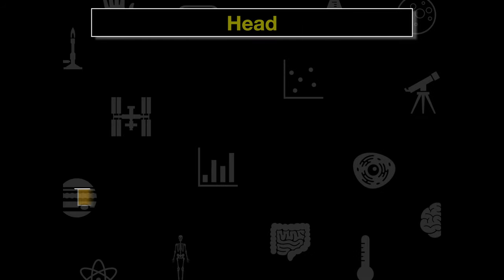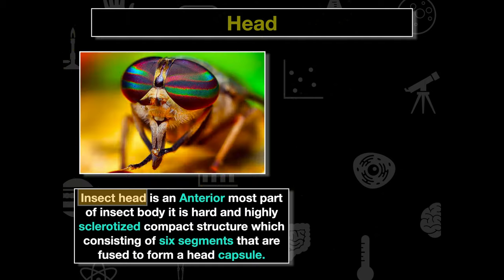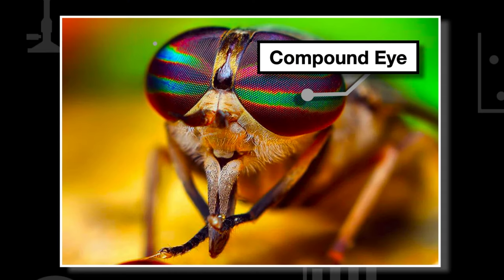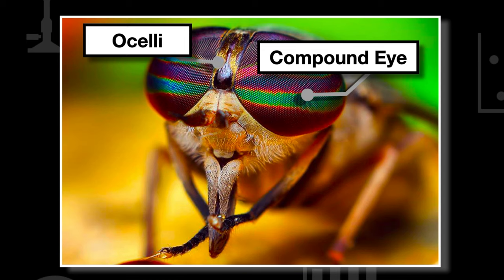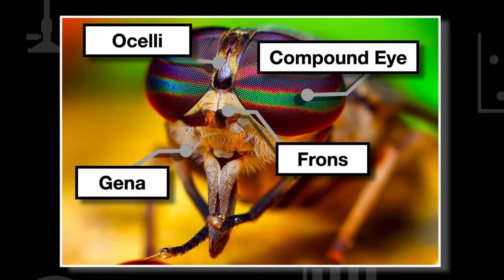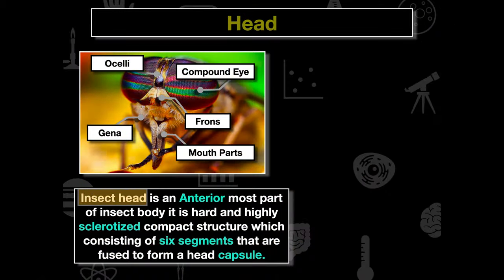The head is the anterior-most part of the insect's body. It is hard and highly sclerotized, and this compact structure consists of six segments fused to form the head capsule. Looking at a fly head, we can see the compound eye and the ocelli on top. We can divide the head into sections: the frons, the gena, and the mouthparts. The mouthparts depend on how the organism has evolved and what its primary food source is.